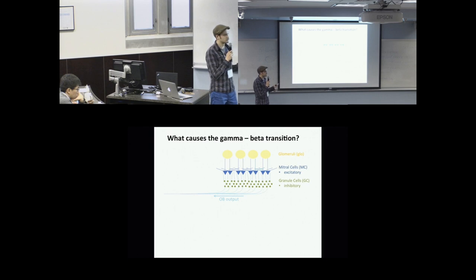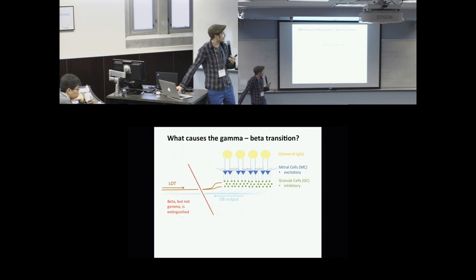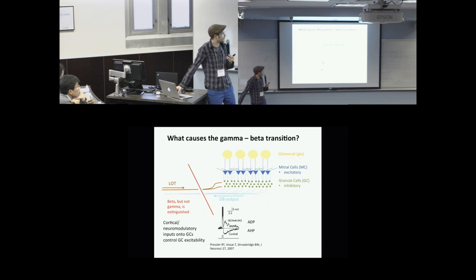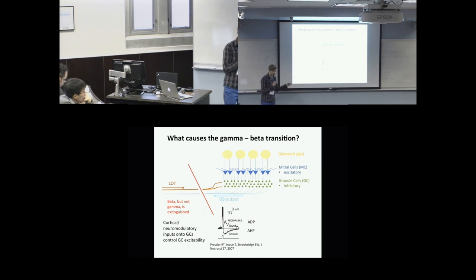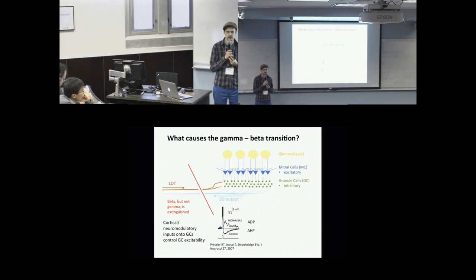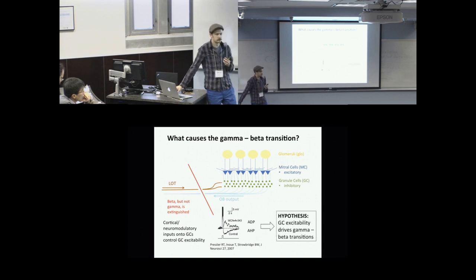I have a standard mitral cell–granule cell interaction model. Evidence we rely on: if you introduce a lesion of the lateral olfactory tract, you block beta but not gamma — so feedback inputs are necessary for beta generation. I am wondering what exactly these feedback inputs are doing. One possibility is that they modulate granule cell excitability. An example from Pressler 2007: addition of a muscarinic agonist converts granule cell hyperpolarization to an after-depolarization. My hypothesis is that granule cell excitability might drive this transition, controlled by cortical input.